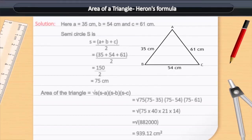Solution: Here, A is equal to 35 cm, B is equal to 54 cm and C is equal to 61 cm.